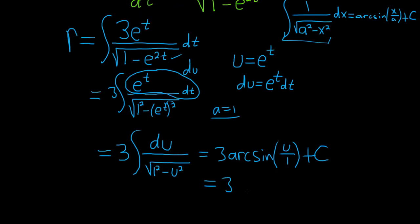This is 3 arc sine, and then u was e to the t. So it's e to the t over 1, so it's just e to the t. What a cool answer. And then plus our constant of integration, capital C.